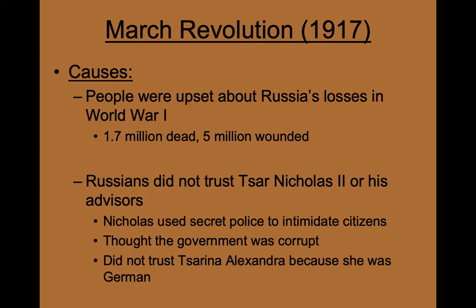Nicholas would use secret police to intimidate and arrest citizens who were critical of him. This led to the Russian people thinking that Nicholas and his wife, Tsarina Alexandra, were corrupt. They believed that they were only looking out for their interests and were sacrificing the Russian people in order to meet their needs.